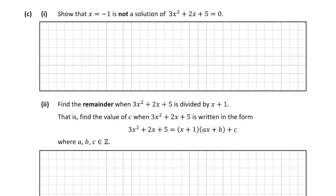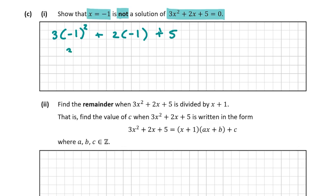Now we move on to question C. Part one is quite manageable — it asks us to show that x = -1 is not a solution of 3x² + 2x + 5 = 0. We substitute x = -1: 3(-1)² + 2(-1) + 5 = 3 - 2 + 5 = 6. Since 6 ≠ 0, we've shown that x = -1 is not a solution.